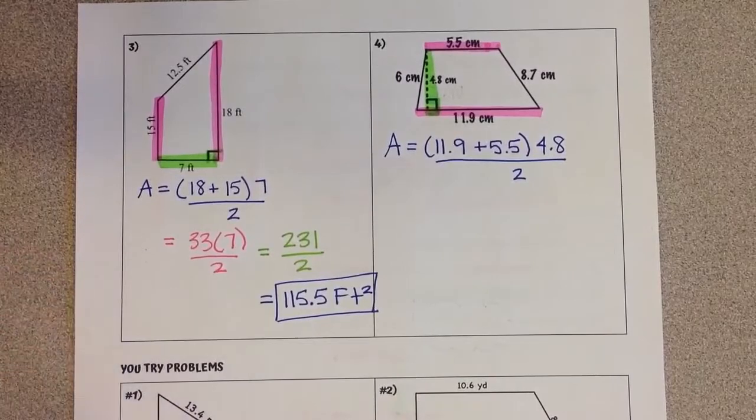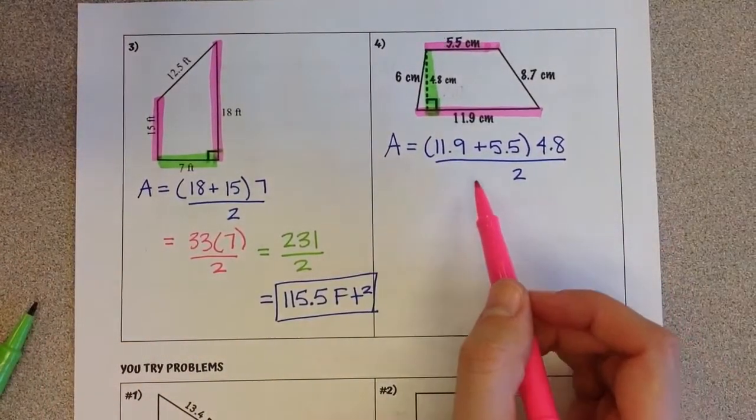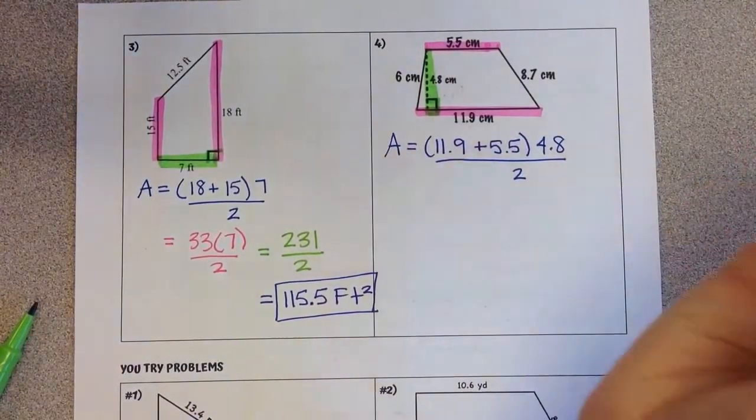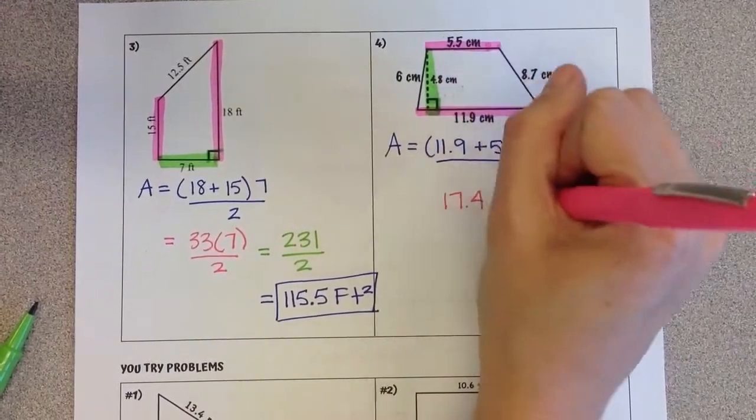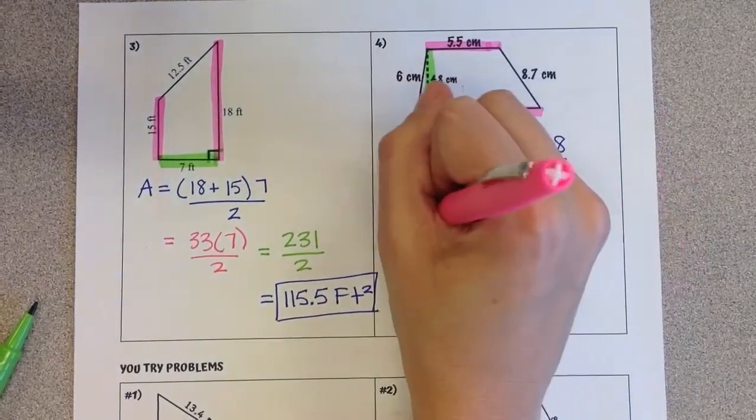We've got decimals here, but we've got calculators to do the work for us. So if we add 11.9 plus 5.5, we get 17.4, times our height of 4.8, divided by 2.